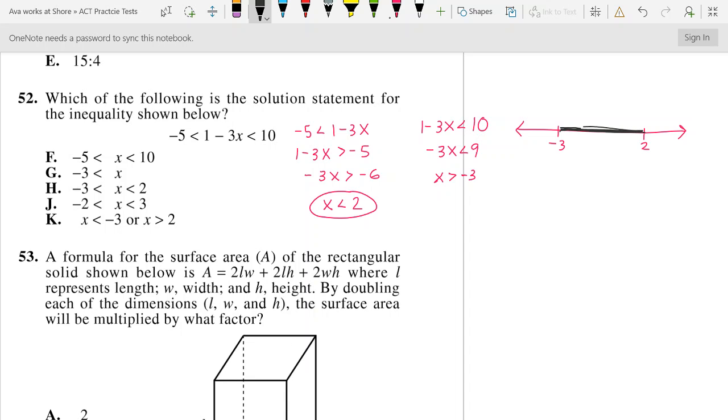So the answer would be x must be greater than negative 3. Okay, so that immediately cancels out F, J, K. But x must also be less than 2, which would then just make the answer H.